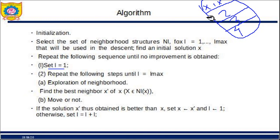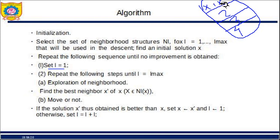To summarize the algorithm: divide the problem search space into neighborhood structures. Assume x is the initial solution and l equals 1. Repeat until all structures are explored — start with l equal to 1, explore the neighborhood, find which value is better than x (that becomes the current solution), and reset l to 1. Otherwise set l equal to 2 and repeat until l equals 4. This is variable neighborhood descent.